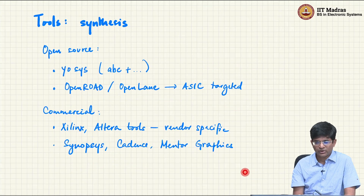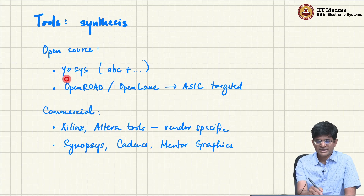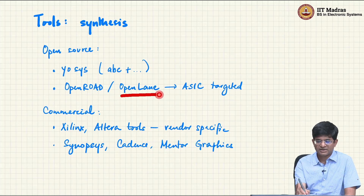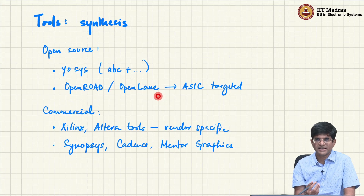Continuing on the topic of tools, synthesis is the path where we take the Verilog you have written and convert it into hardware — meaning a netlist of gates. For open-source tools, there is primarily YOSYS, which is built on top of a compiler called ABC from the University of California at Berkeley. YOSYS is used as part of the OpenROAD project, which has a subset called OpenLane targeted towards a specific set of libraries. Interestingly, these have capabilities where you can actually submit your designs and get them fabricated for free, though there are restrictions and a selection process.